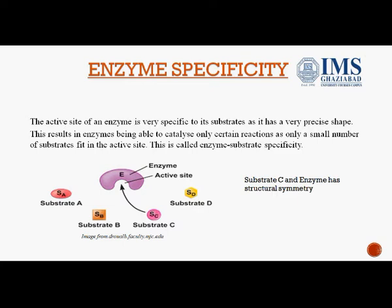Enzyme specificity is the ability of an enzyme to choose an exact substrate from a group of similar chemical molecules. It operates through structural and conformational complementarity between enzyme and substrate. As we can see in this diagram, there are four substrates: A, B, C, and D. Substrate C has a complementary structure to the active site of the enzyme, so it will bind to the enzyme and convert the substrate into product.